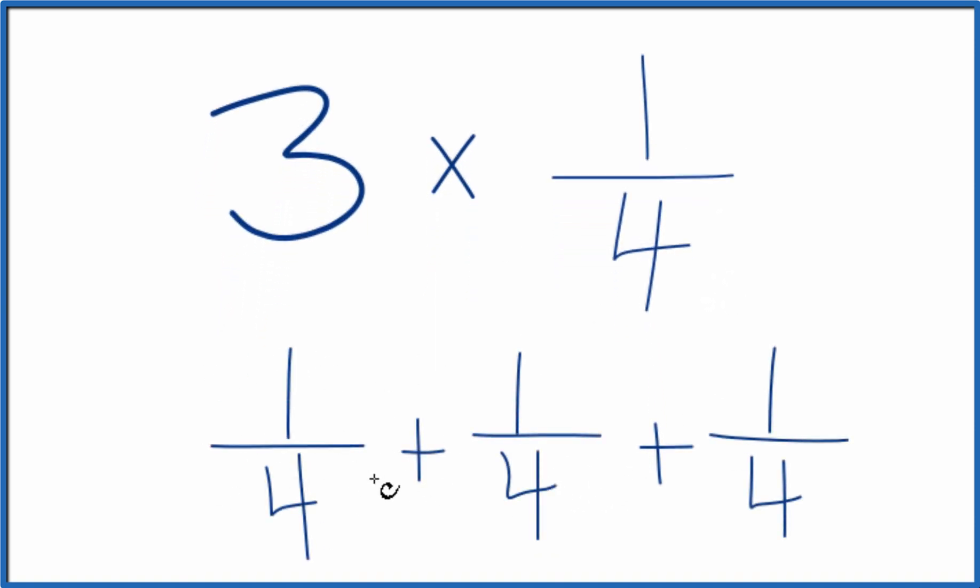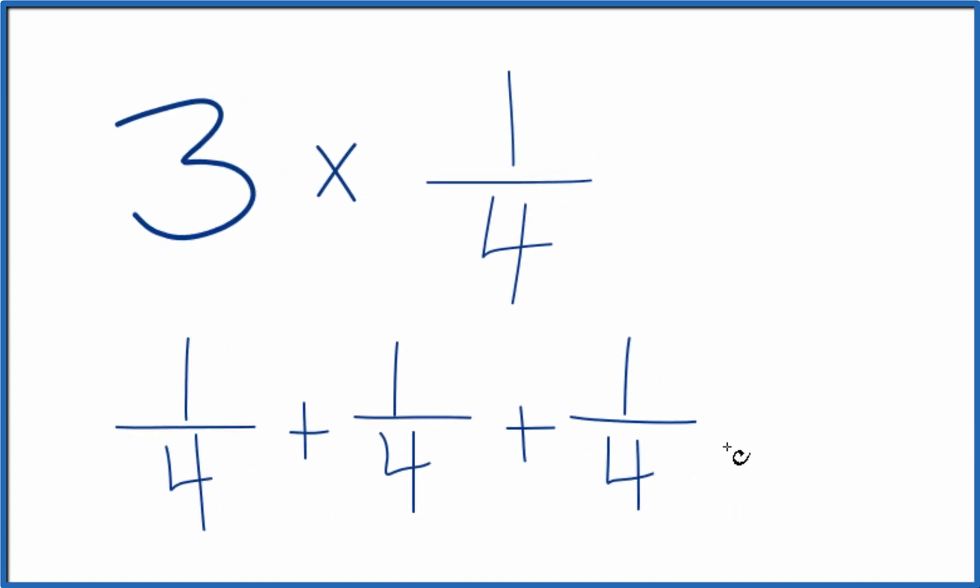So when we add fractions, the denominator is the same. We just keep that the same and then we add the numerators. 1 plus 1 plus 1 is 3. So 3 times 1 fourth, that equals 3 fourths.